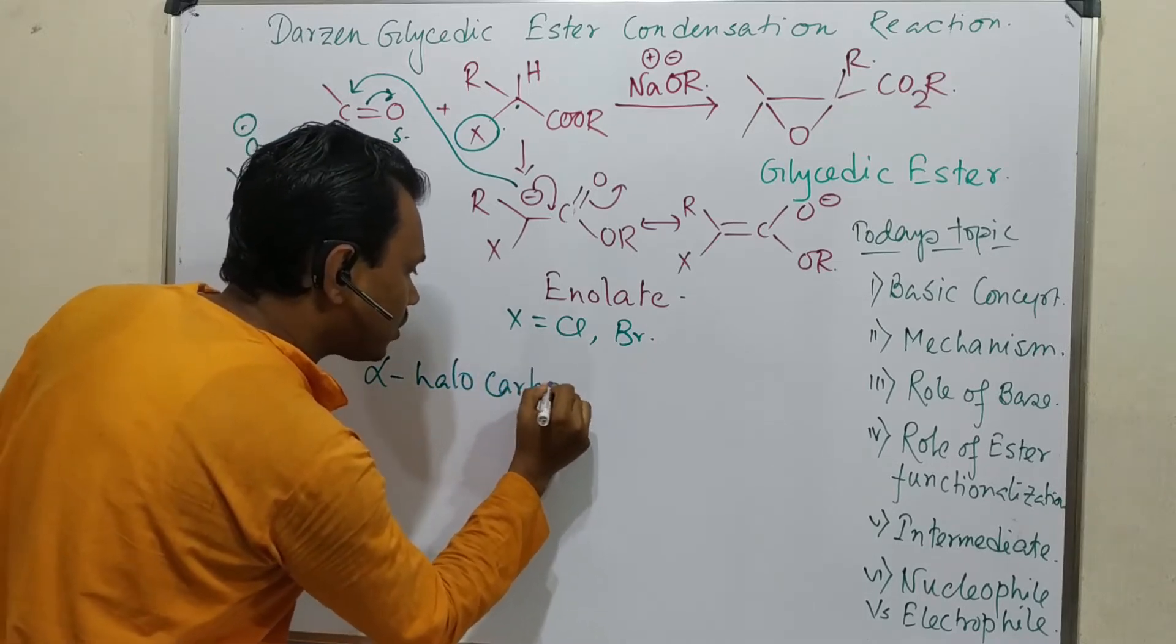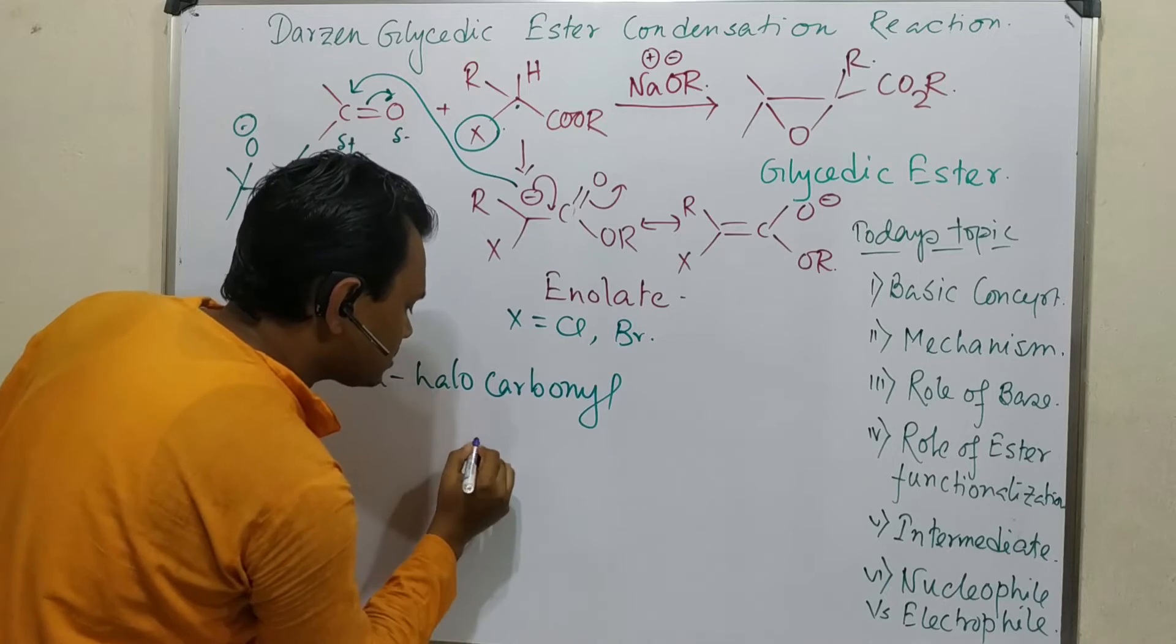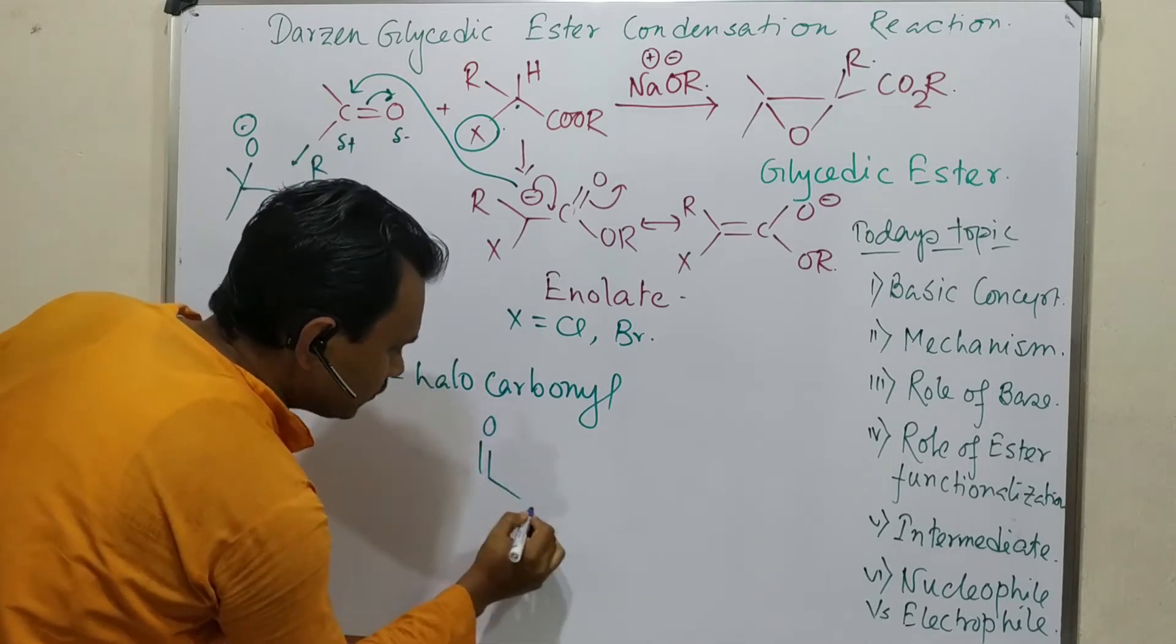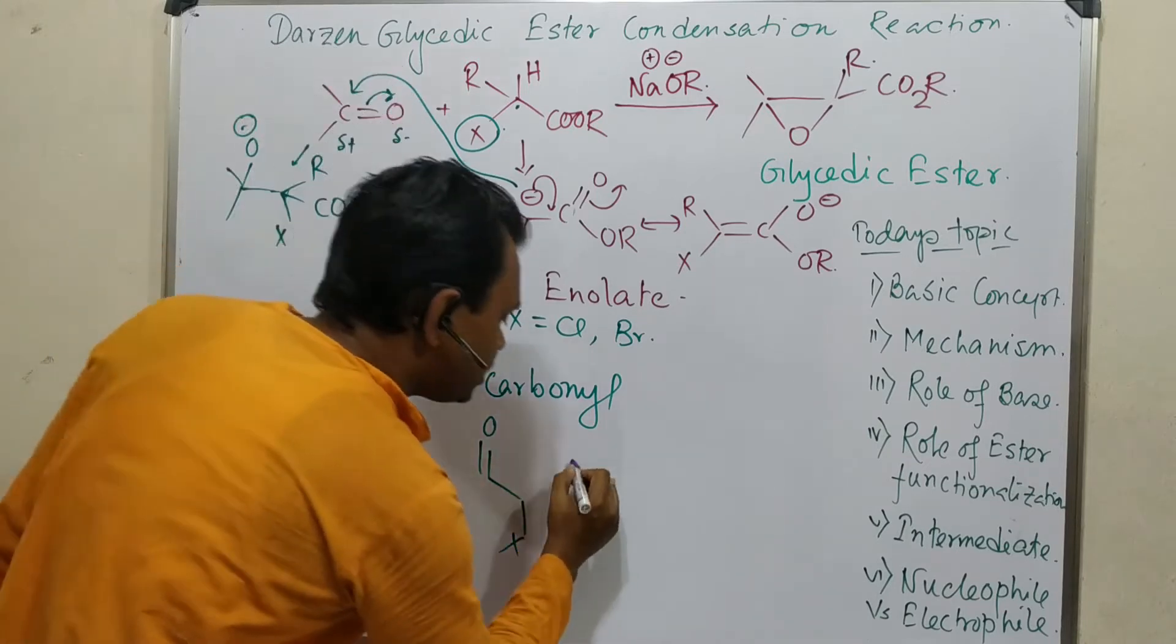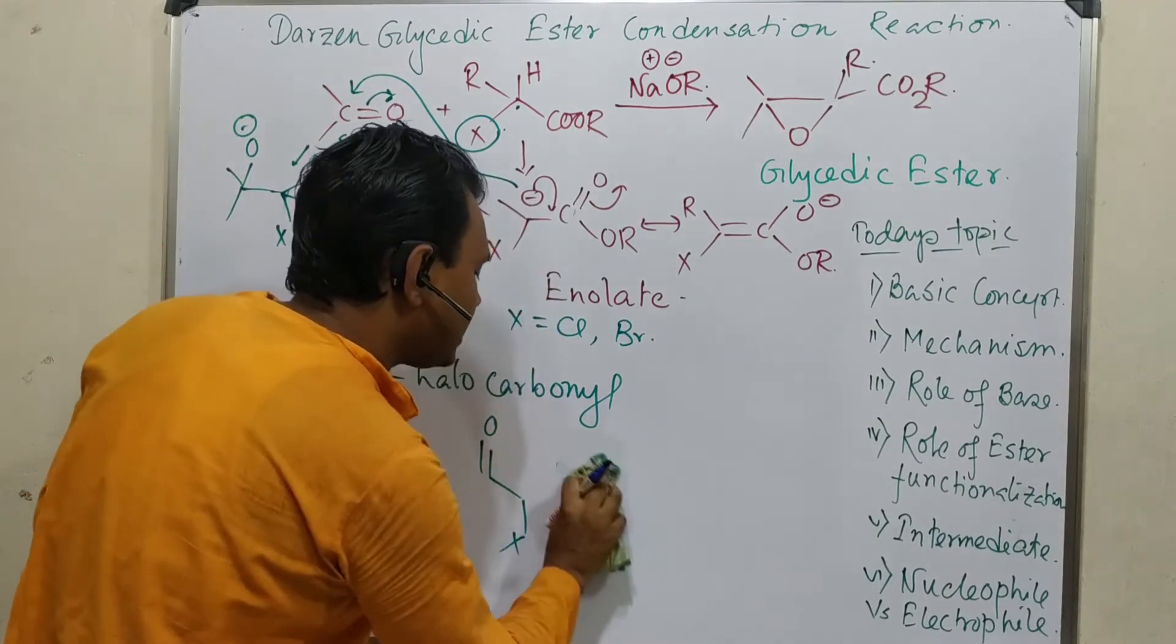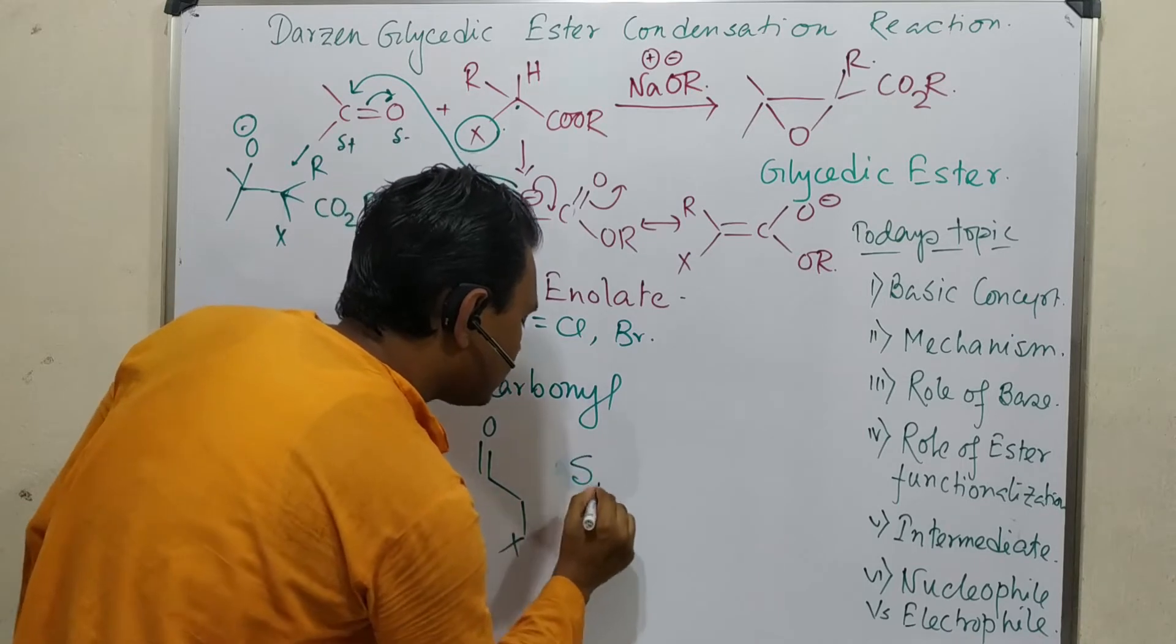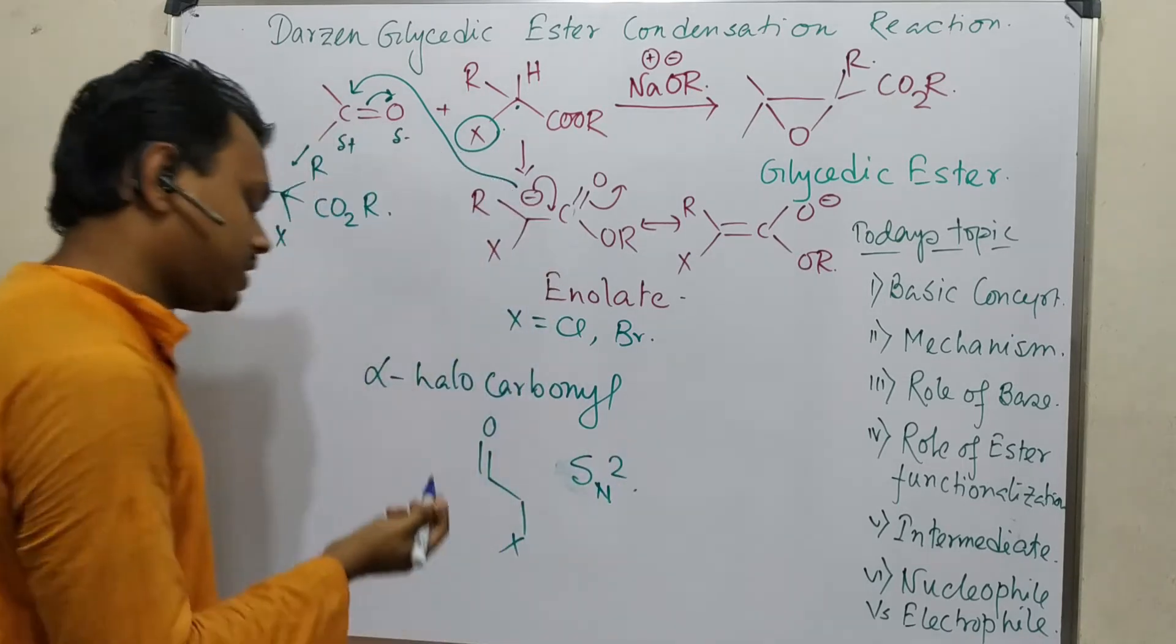Alpha-halo carbonyl means this is a carbonyl group, alpha to this is a halogen. We know they can do a very efficient SN2 reaction. So if they do very efficient SN2 reaction, why is it not happening?